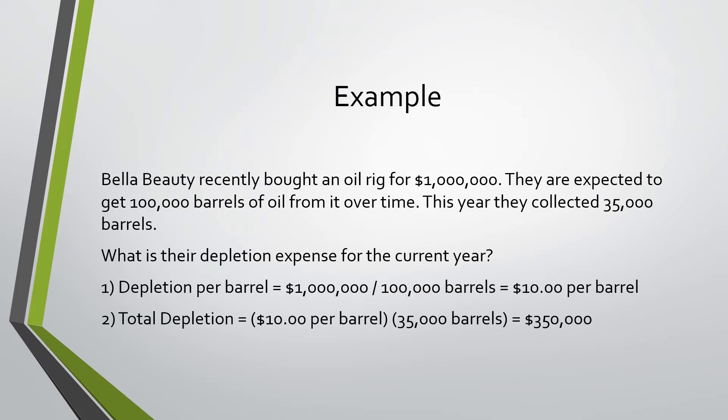In this example, Bella Beauty recently bought an oil rig for $1 million. They are expected to get 100,000 barrels of oil from it over time. This year, they collected 35,000 barrels. What is their depletion expense for the current year?